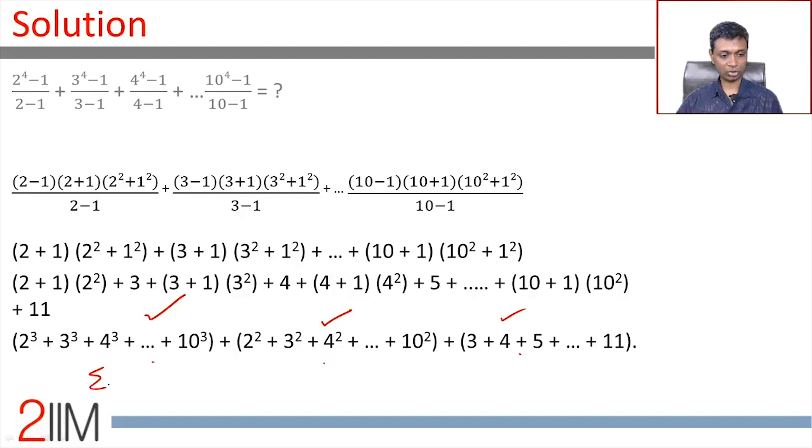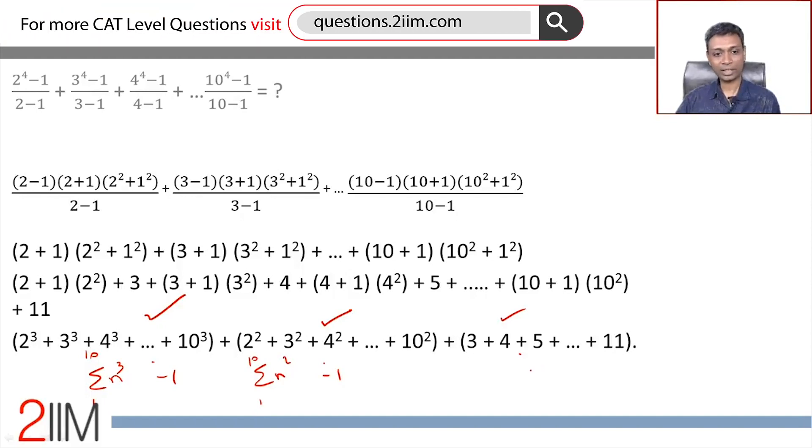How do we get this? We can do sigma n^3 from 1 to 10 and subtract 1. Sigma n^2 from 1 to 10 and subtract 1. This we can do sum of all terms to 11 and then subtract 3: 11×12/2 - 3.